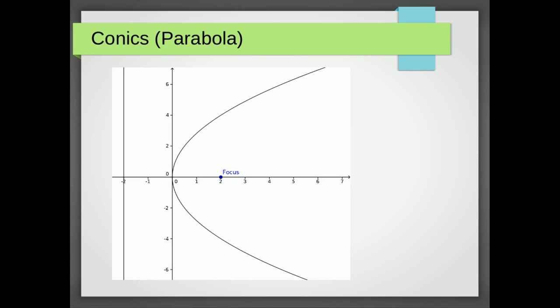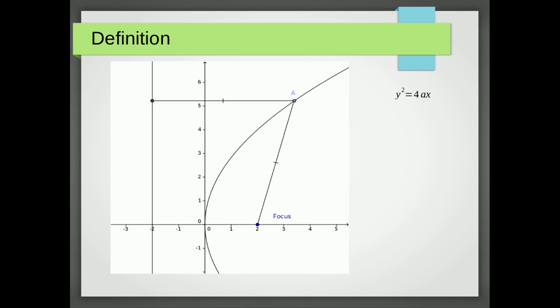In this video we're going to look at how to deal with parabolas where we are given the focus and directrix. In the diagram below you can see a parabola with a focus at (2, 0) and a directrix on the line x equals minus two. The definition of a parabola: if we draw a line from the focus to a point on the parabola and then the shortest line from that point to the directrix, those lines are equal.